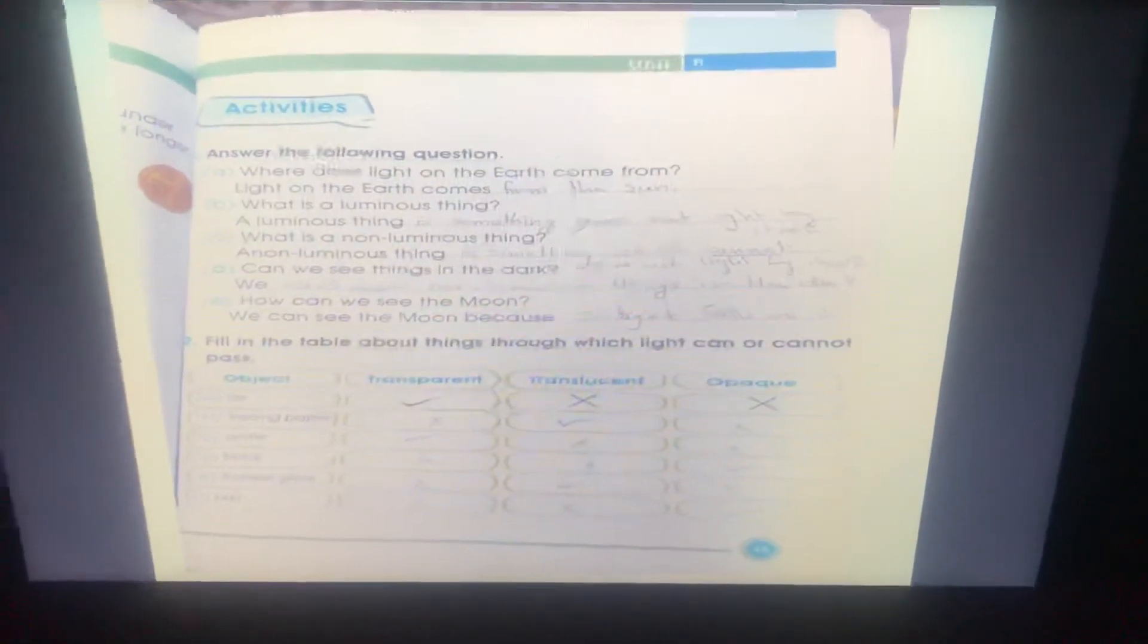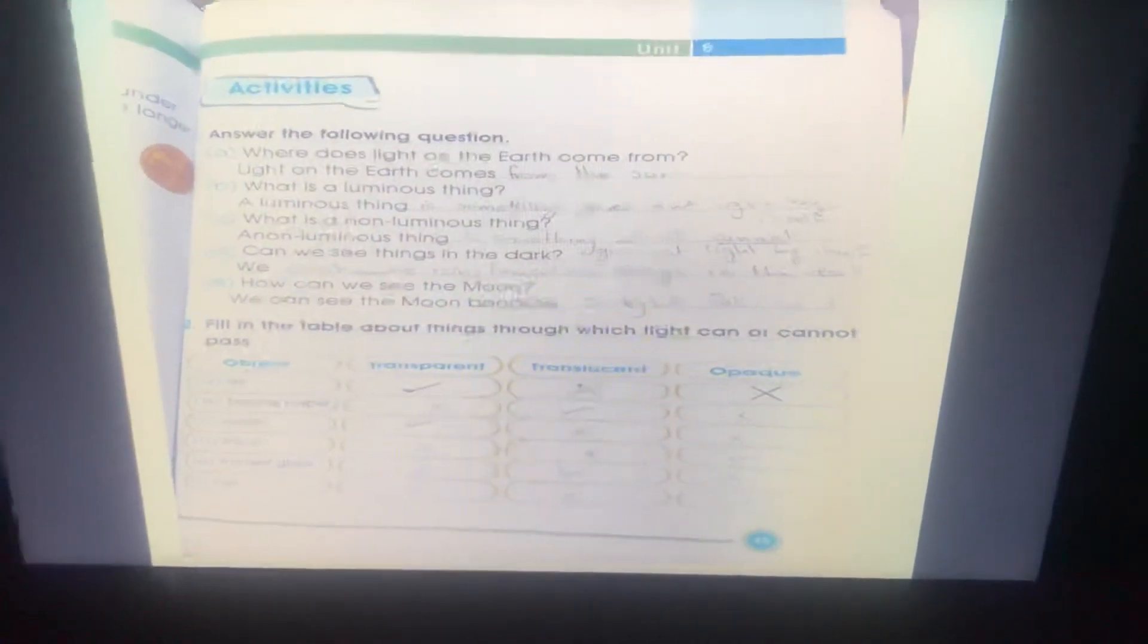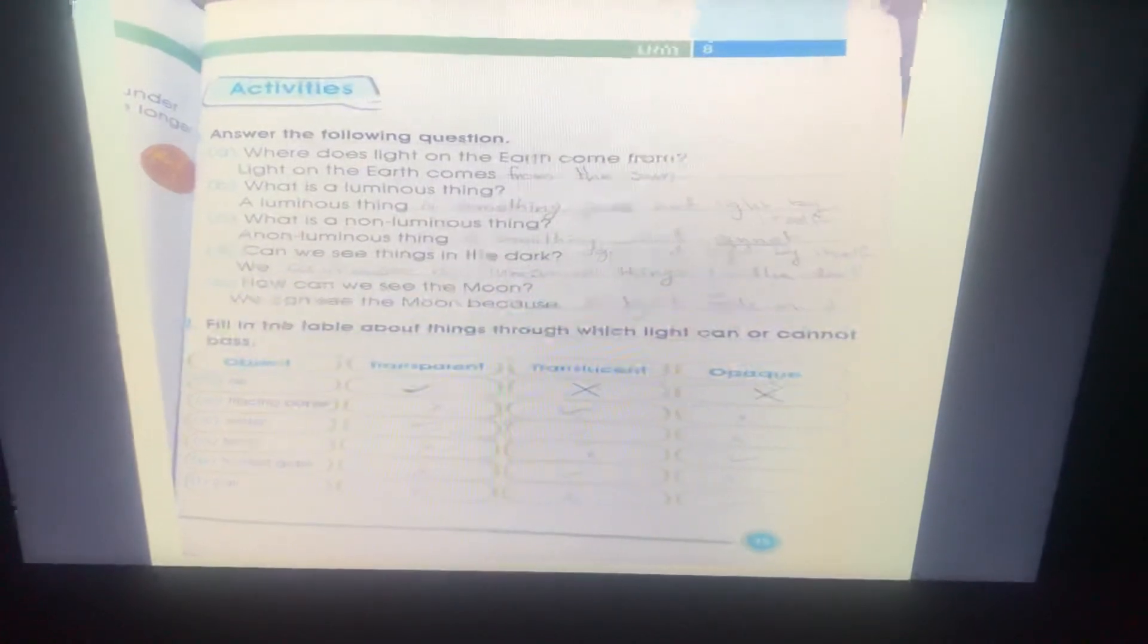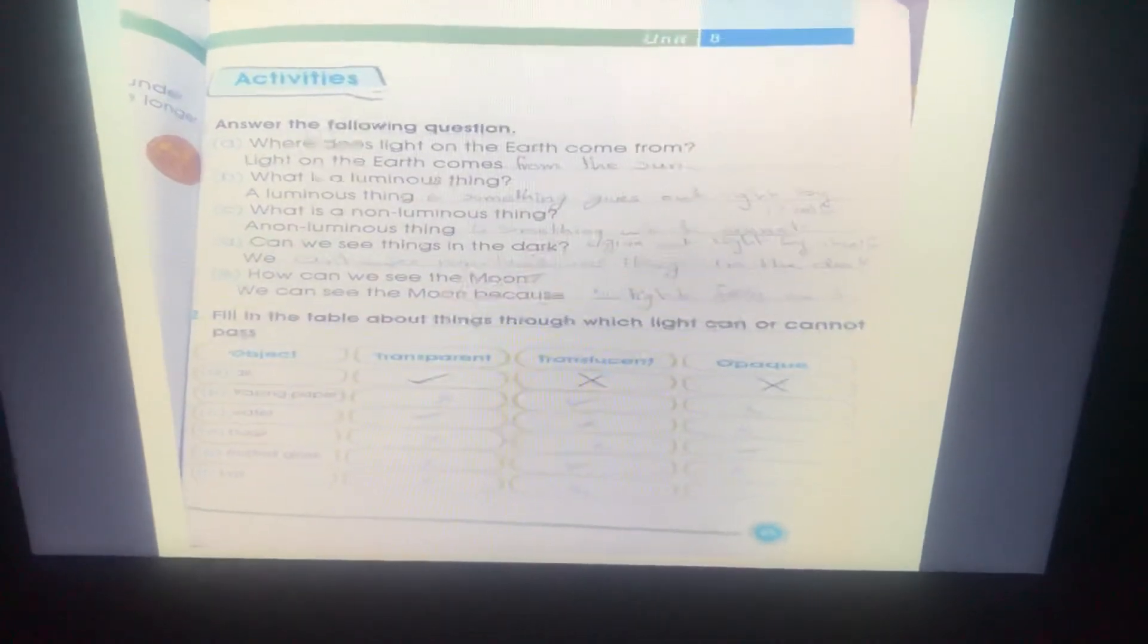What is a luminous thing? Excellent. A luminous thing is something which cannot give out light by itself.